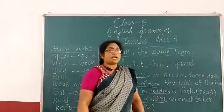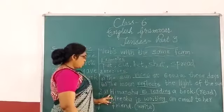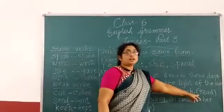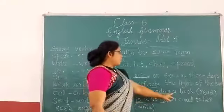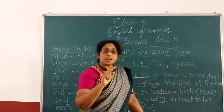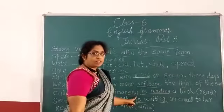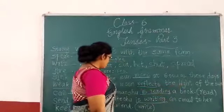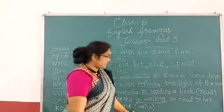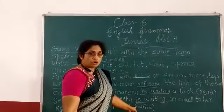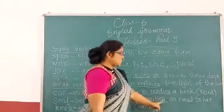Next exercise: fill in the blanks with the present continuous tense of the verb given in brackets. 'Himanshu dash a book' — bracket word: read. Since Himanshu is singular, the answer is 'is reading.' Himanshu is reading a book. Next: 'Nisha dash an email to her friend' — bracket word: write. Nisha is singular, so the answer is 'is writing.'